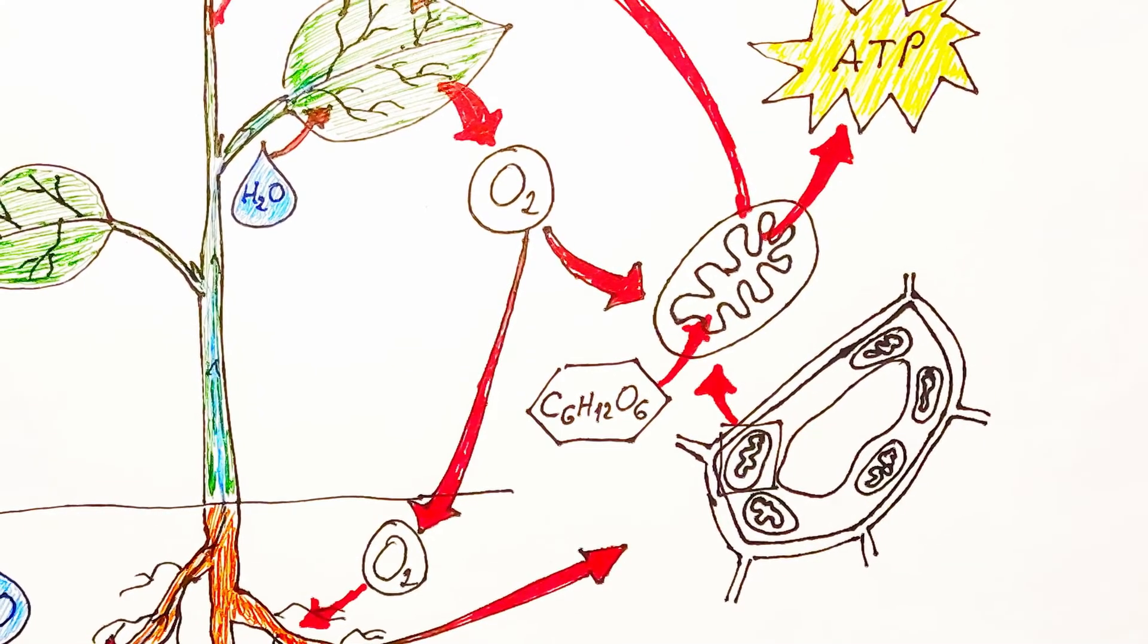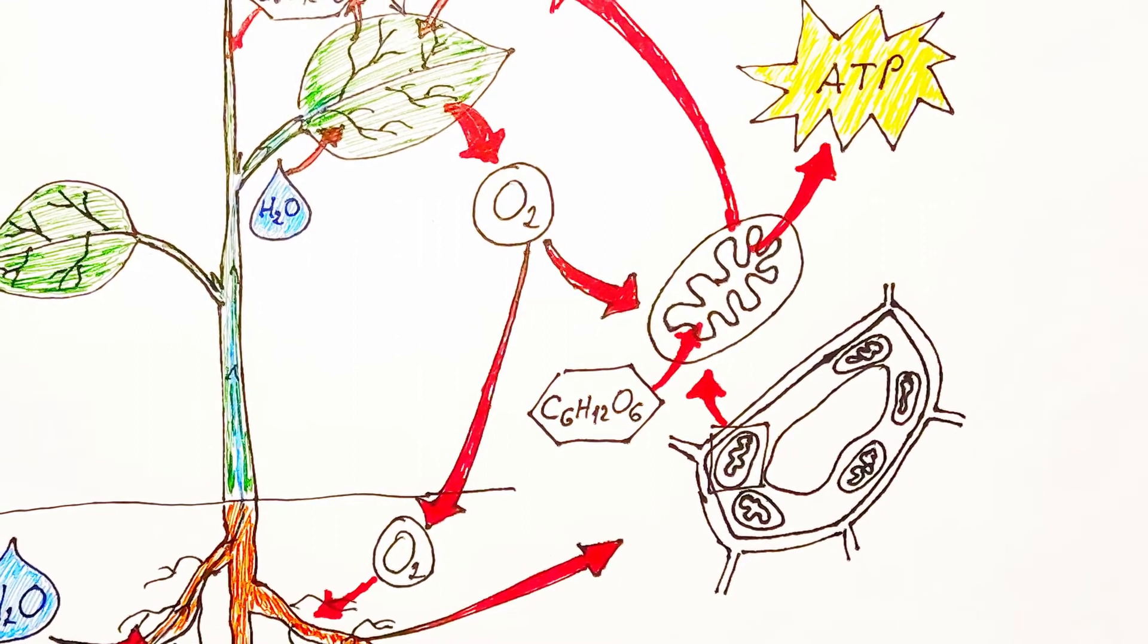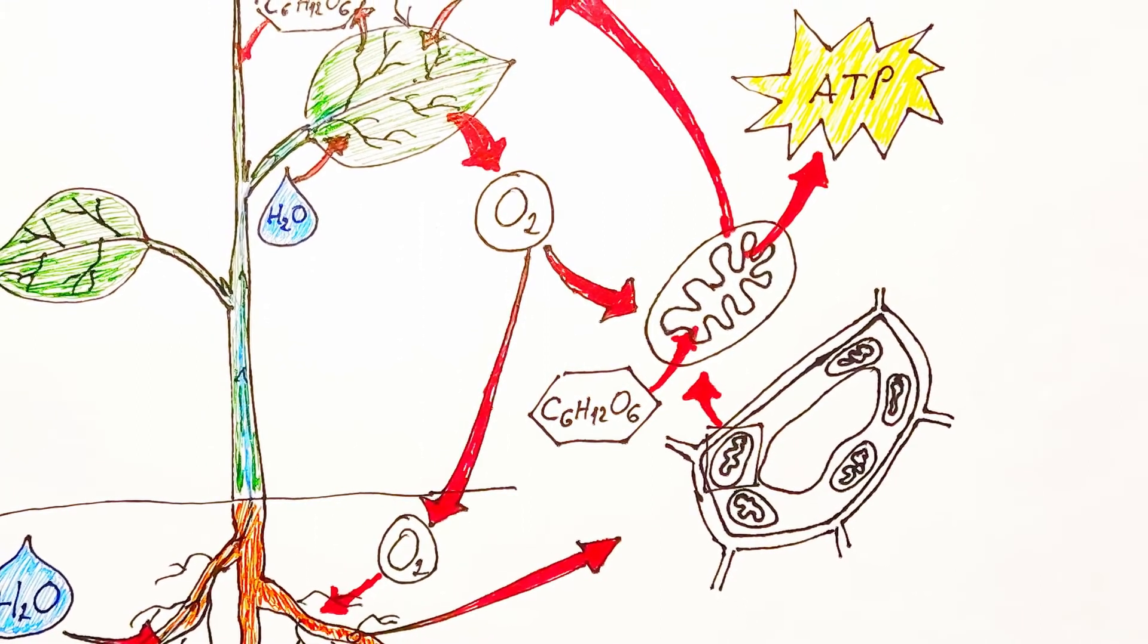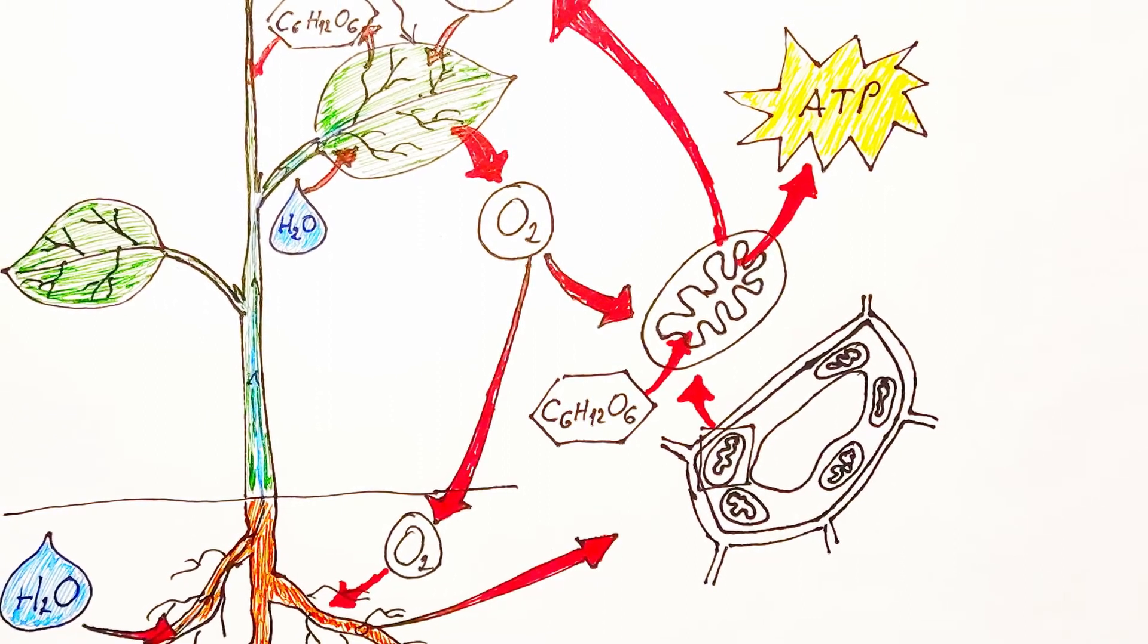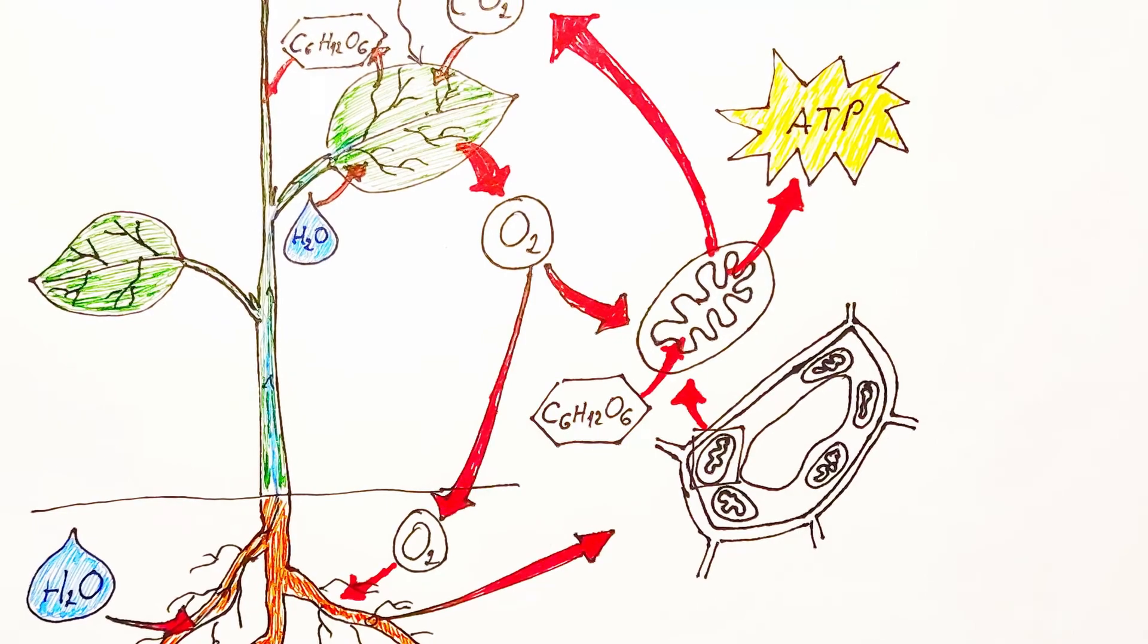As mentioned earlier, ATP can be made during cellular respiration in mitochondria only if oxygen is available in the root cells. Therefore, it is very useful for the plant that the soil surrounding the root system is loose and well aerated.